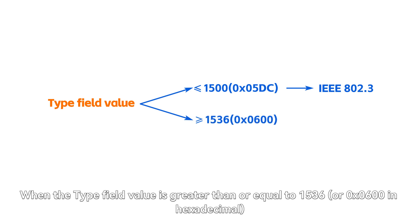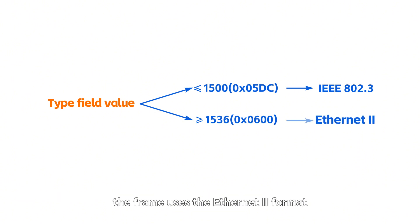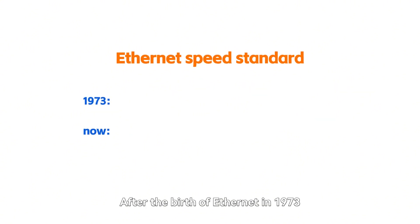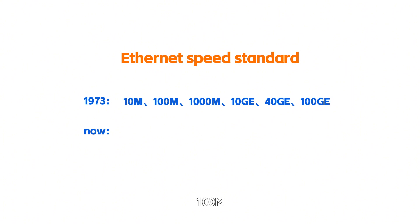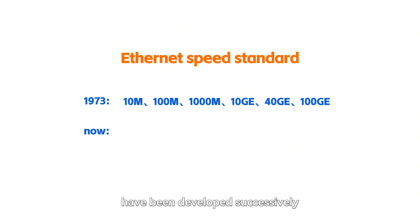When the type field value is greater than or equal to 1536 (0x0600 in hexadecimal), the frame uses the Ethernet-2 format. After the birth of Ethernet in 1973, six Ethernet speed standards — 10M, 100M, 1000M, 10GE, 40GE, and 100GE — have been developed successively.